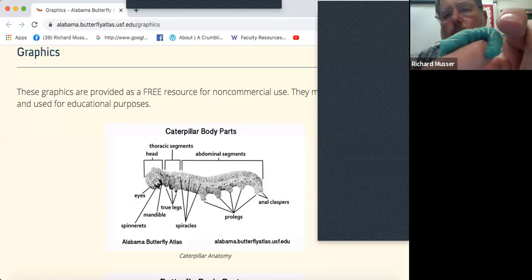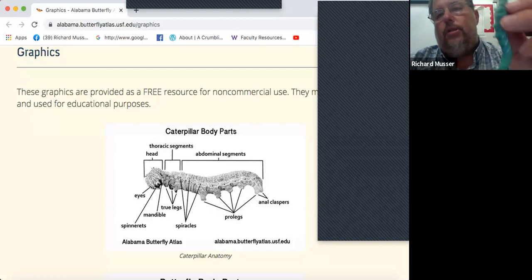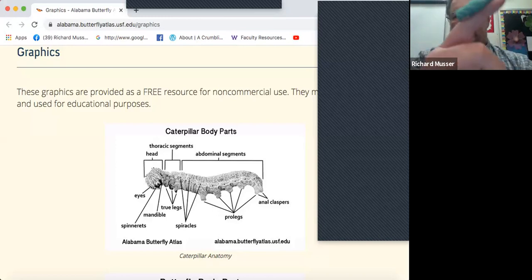As I mentioned, the true legs are found on the thorax up here near the head. But these down here are actually pro legs holding on pretty good. They're just protrusions of the abdomen. This is the abdomen region all the way down to the end, and this is called an anal clasper that allows them to grab on the leaves.